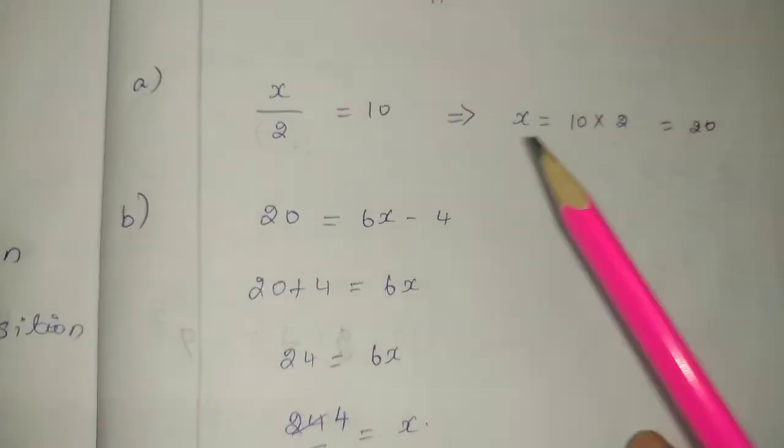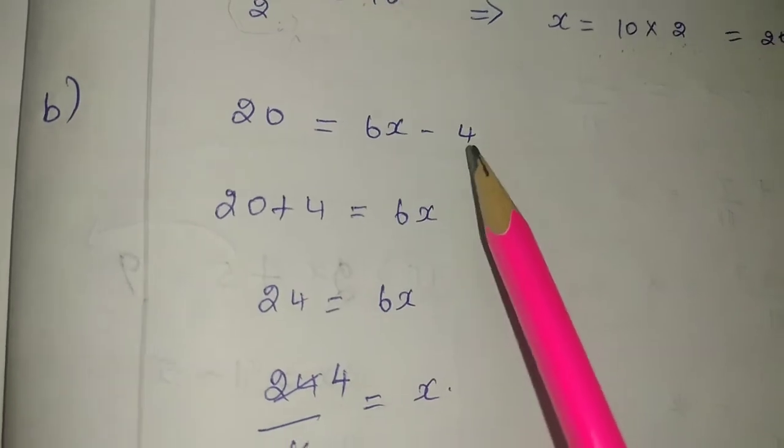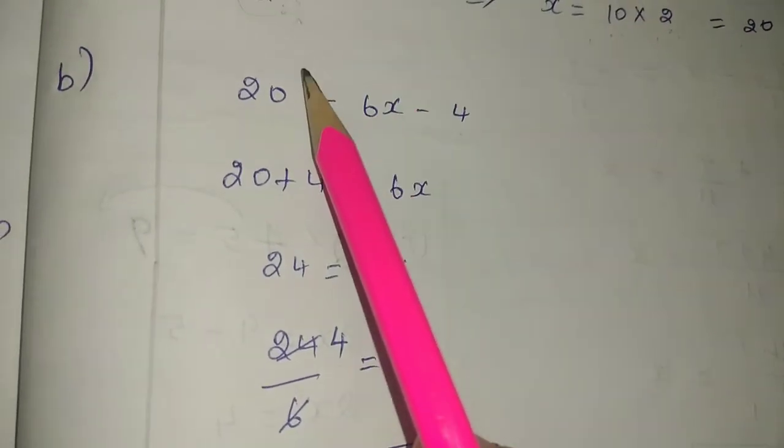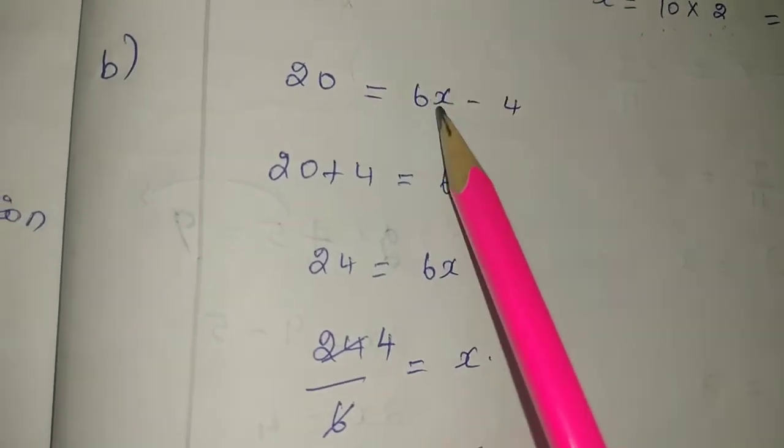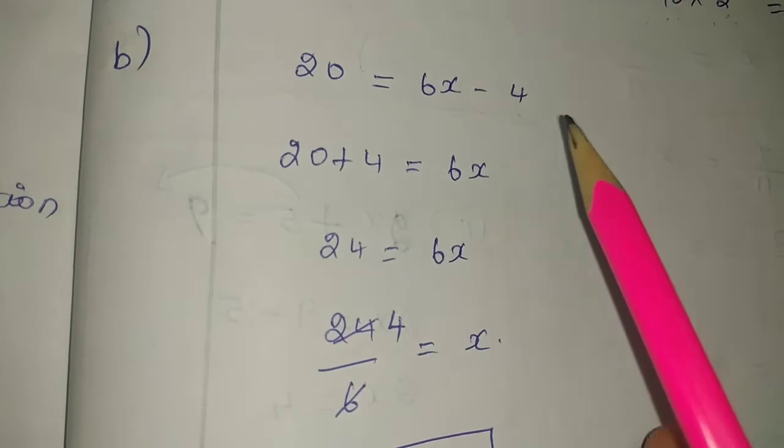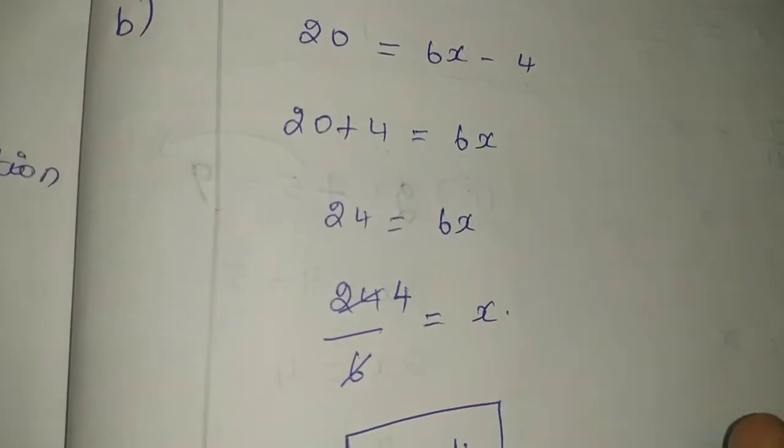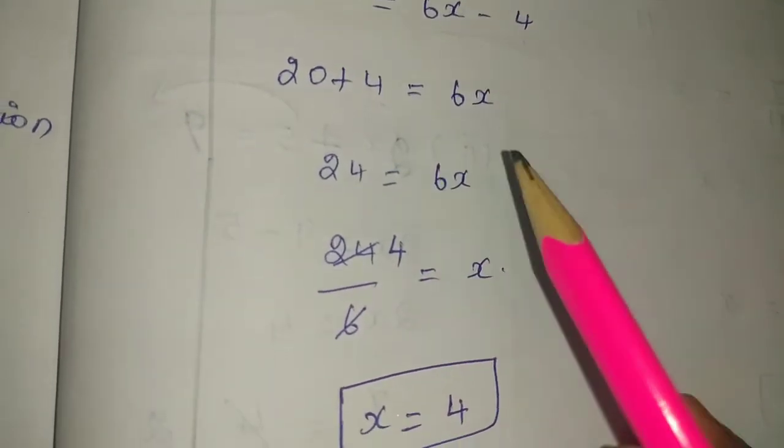Second one: 20 equals 6x minus 4. This is a constant term, transposition. The constant term transposes. This will be clear and easy. Minus 4 becomes plus 4, so this equals 6x. 20 plus 4 is 24 equals 6x.